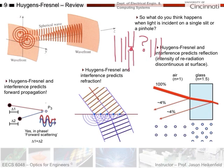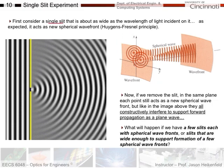If I have all these plane waves coming in to something really narrow with a re-radiator right there — would it keep moving forward, or would this system break up because all the other radiators are blocked? I only have one radiator here, so does it have to go straight forward, or could it go in all directions since it's unbound? Here is a single slit about as wide as the wavelength of incident light. At that point you treat it as a single tiny re-radiator, and because there's nothing else for it to interfere with, it can propagate in all directions.